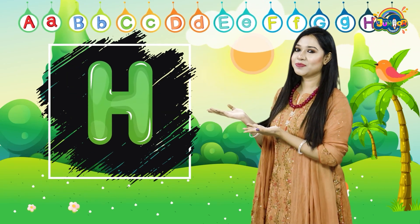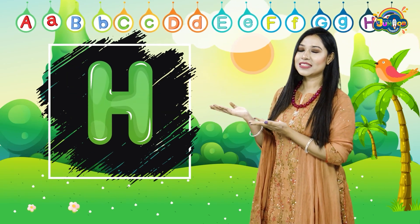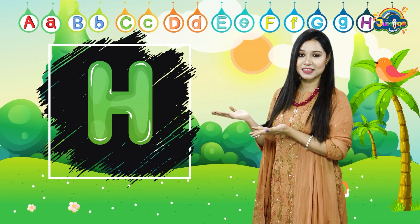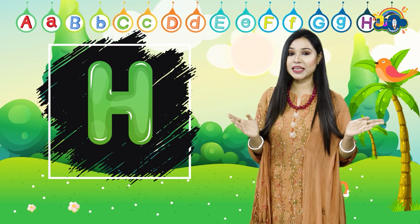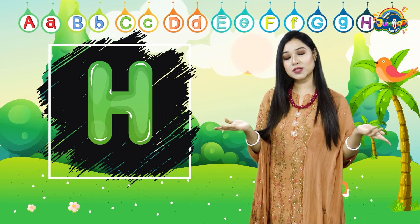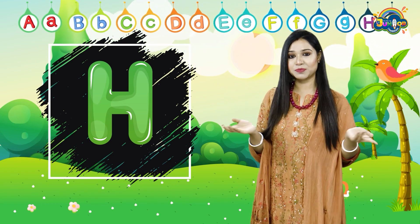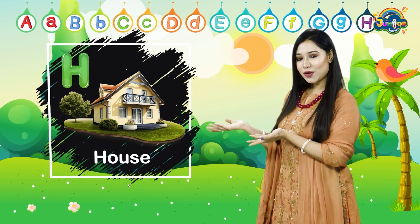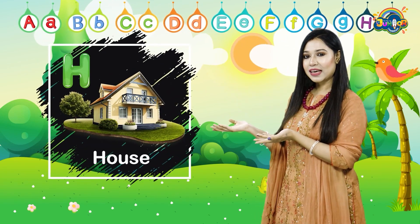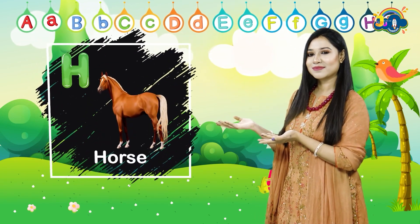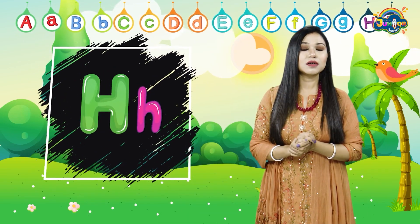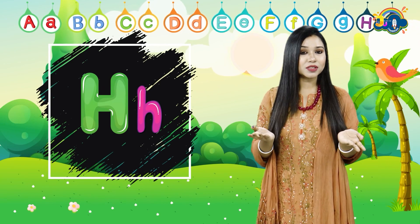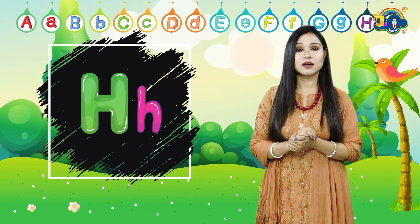What's the letter? This is the letter H. Now it's time for making the words with H. H for house. H for horse. The sound of H is H. What's the sound? It's H.